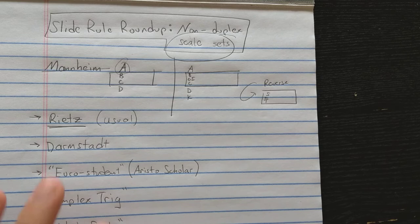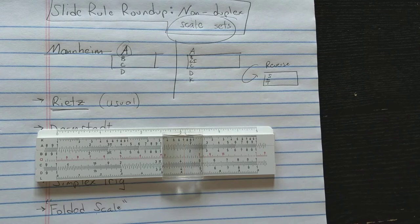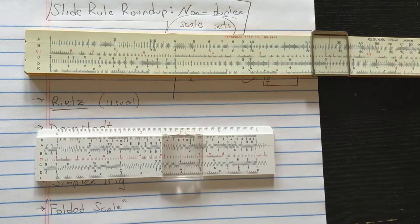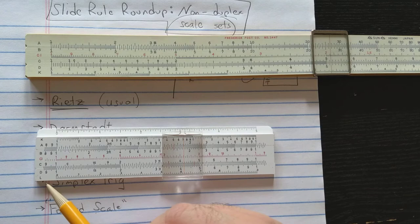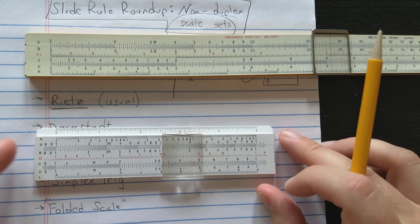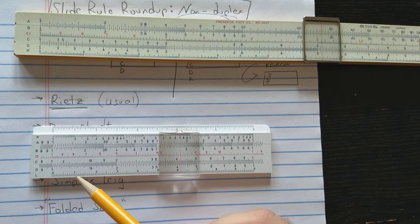Stepping up to the next level of complexity is the Rietz style slide rule. Here's a Rietz style slide rule of a type I've used in many videos. First is the Mannheim type slide rule. The Rietz slide rule adds on the front of the slide rule an L scale. So the K scale is moved to the top and the L scale is in place on the bottom.